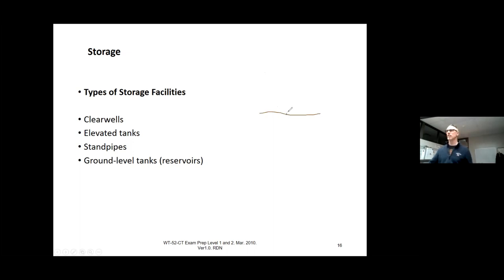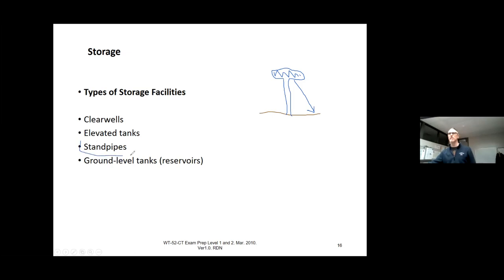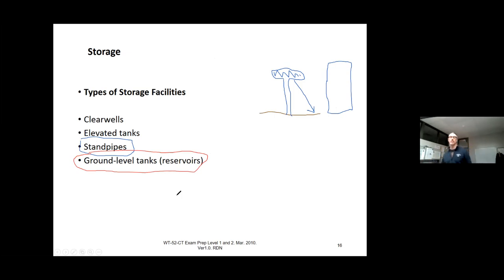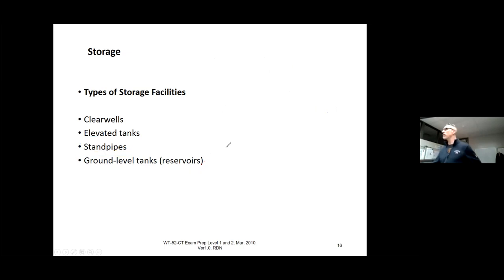A standpipe is another type — it's basically a solid tank, very similar to an elevated storage tank. For Canadian usage, what I see a lot are ground-level tanks like the one in that earlier picture — they could be fully buried or partially buried. We also talked about clear wells — below ground, made of concrete, which is usually the material of choice. I've actually seen wood stave ones in the old days, but typically it's concrete in-ground.